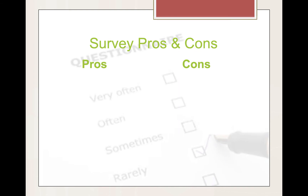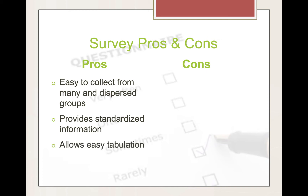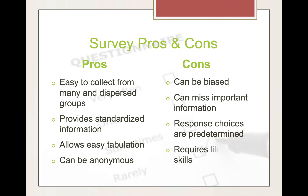Both of these are useful for surveying groups of any size and are typically designed to determine opinions, attitudes, or present practices. There are some pros and cons to surveys. First of all, it's easy to collect information from many and dispersed groups. It provides standardized information, allows for easy tabulation, and can be anonymous. The cons, though, are that it can be biased, you can miss important information, response choices are predetermined by the author, and it requires literacy skills.